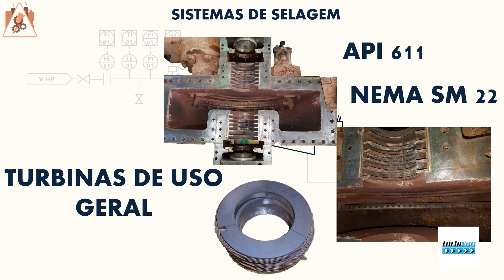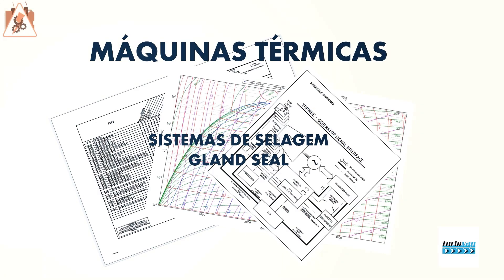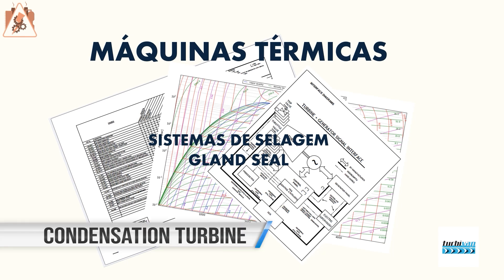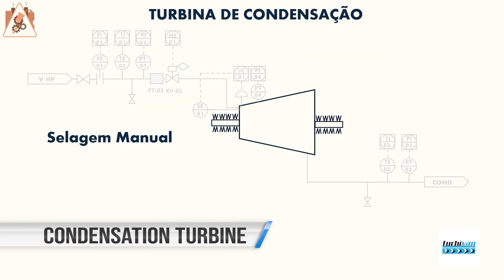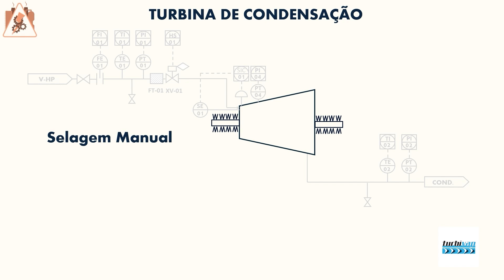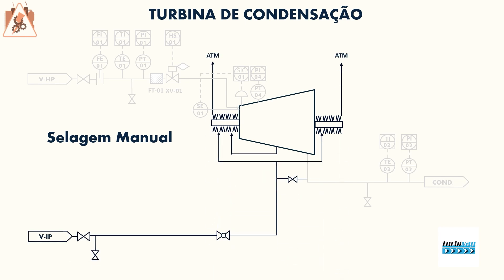For the turbine, receiving condensate from the steam system is a major issue. The standards governing sealing systems include two main ones: API and NEMA. For general purpose turbines, we have API 611 and NEMA SM22; for special purpose turbines, API 612 and NEMA SM23.